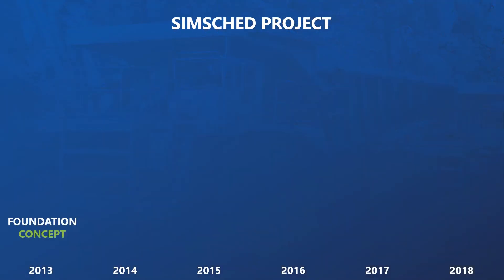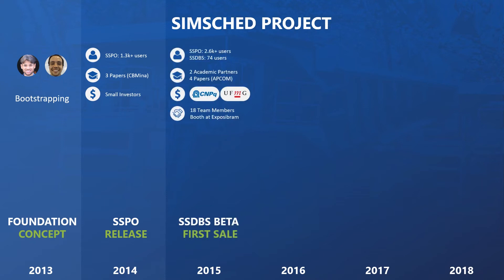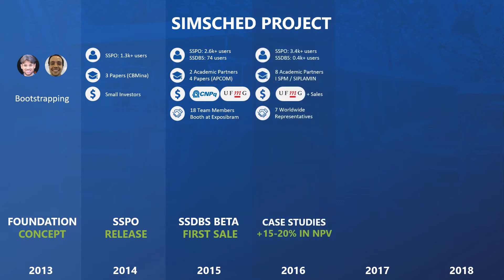Taking the first commercial tool as an example, the SimSched project started in 2013. In the next year, the first free tool for pit optimization with minimum bottom widths and no geotechnical errors was released, called SimSched Pit Optimizer. In 2015, a DBS beta release and the first sale came along. In the following year, case studies were presented pointing to an increase of 15-20% in NPV for real mining operations.